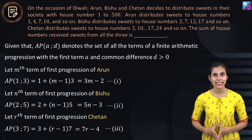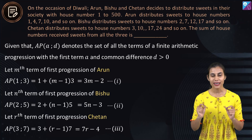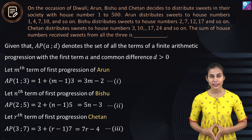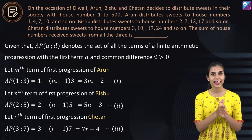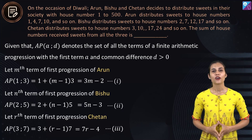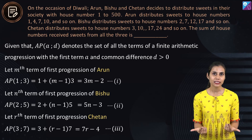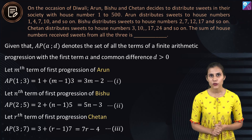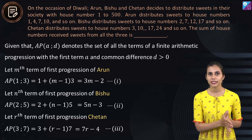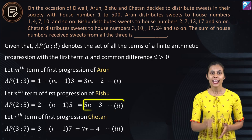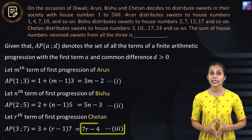The first observation is that the list of house numbers for Arun, Bishu, and Chetan is an arithmetic progression (AP). For an AP with first term A and common difference D, the nth term is A plus (n minus 1) times D. For Arun's AP, first term is 1 and common difference is 3, so the mth term is 3m minus 2. For Bishu's AP the nth term is 5n minus 3, and for Chetan's AP the rth term is 7r minus 4.